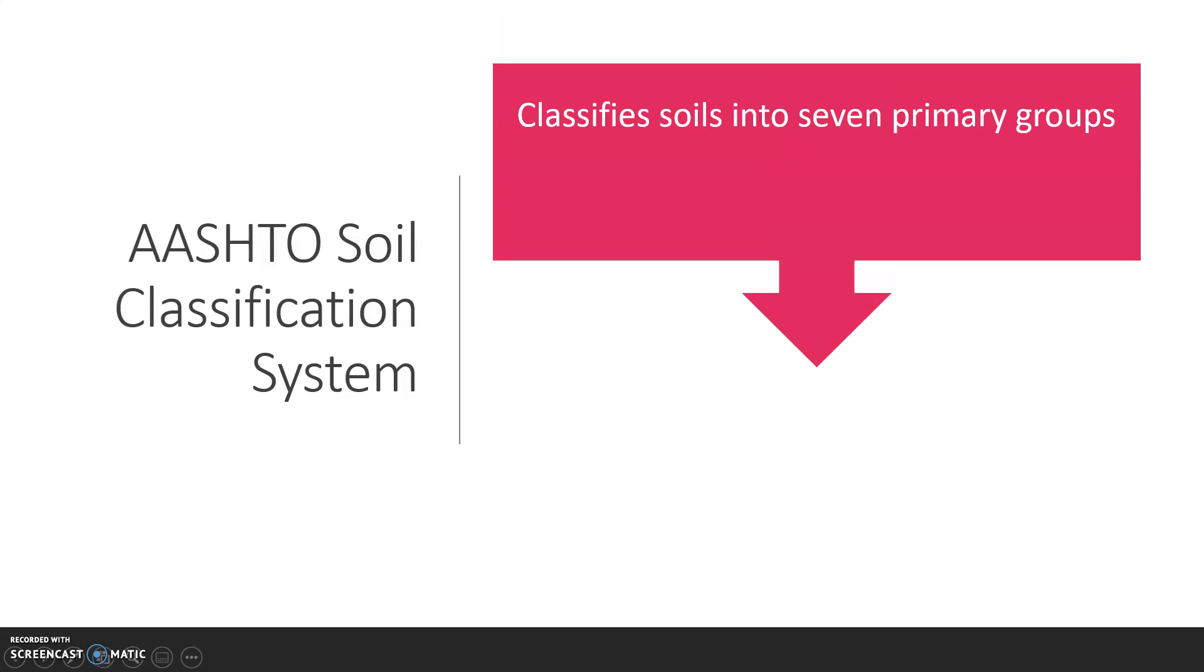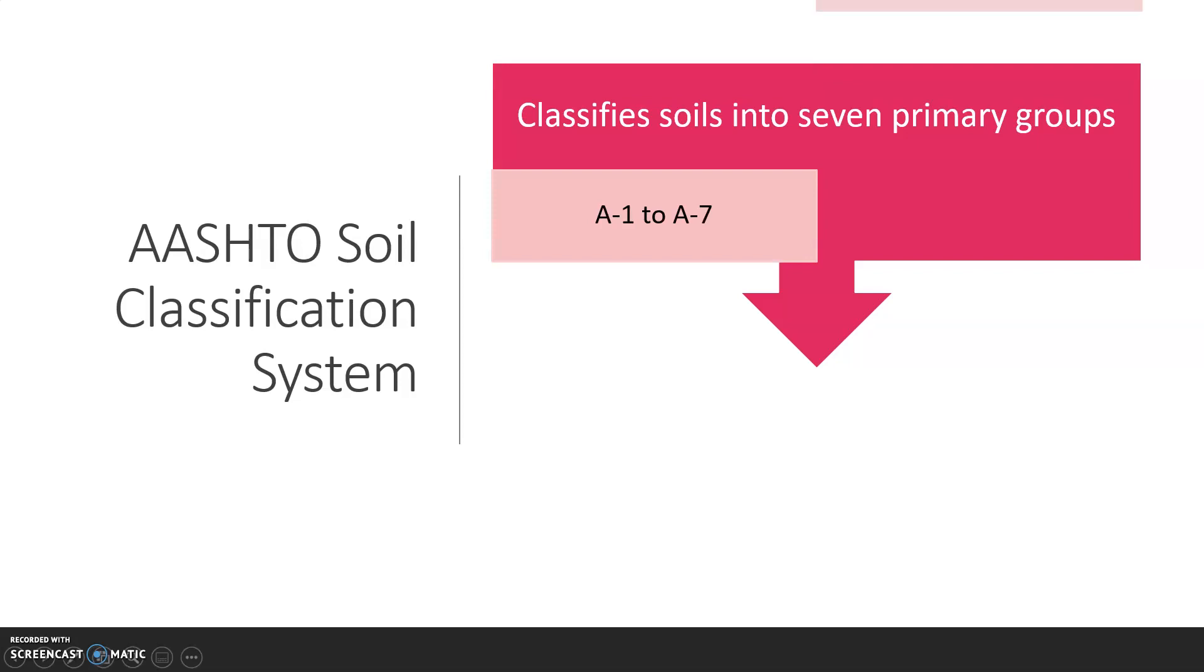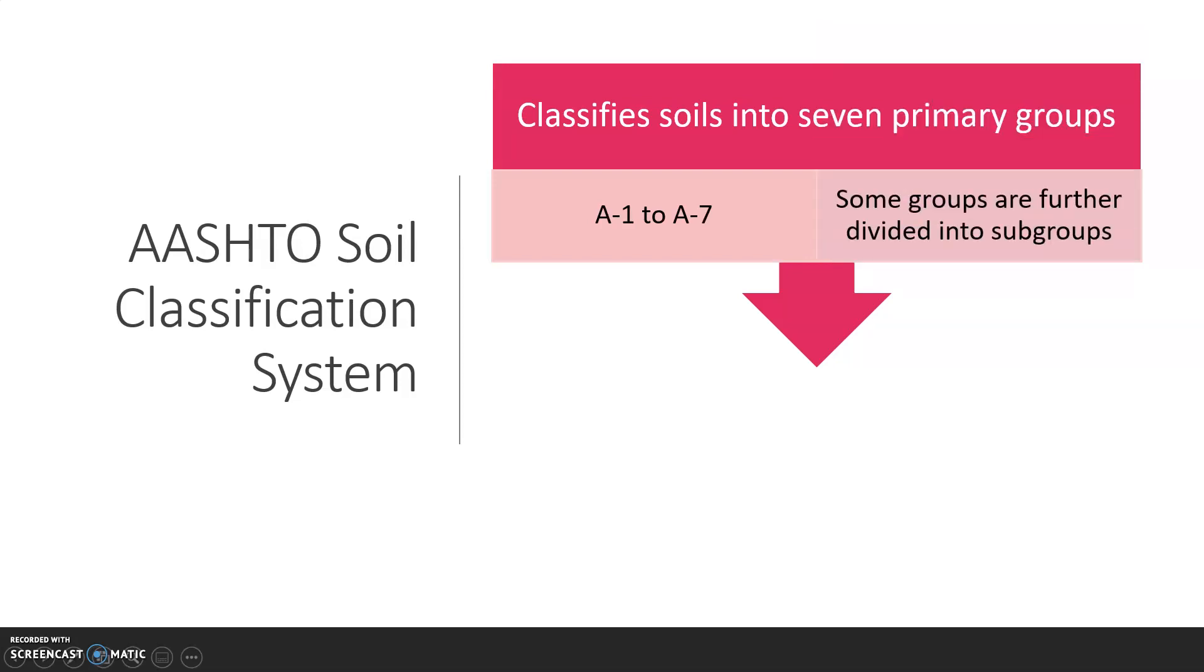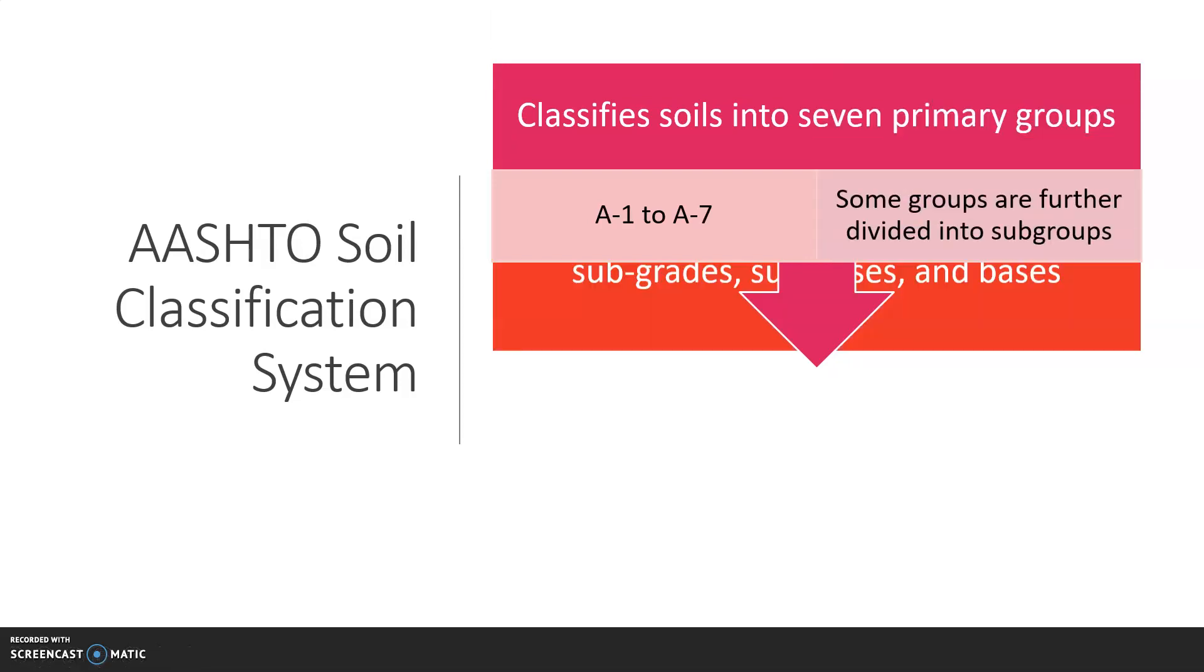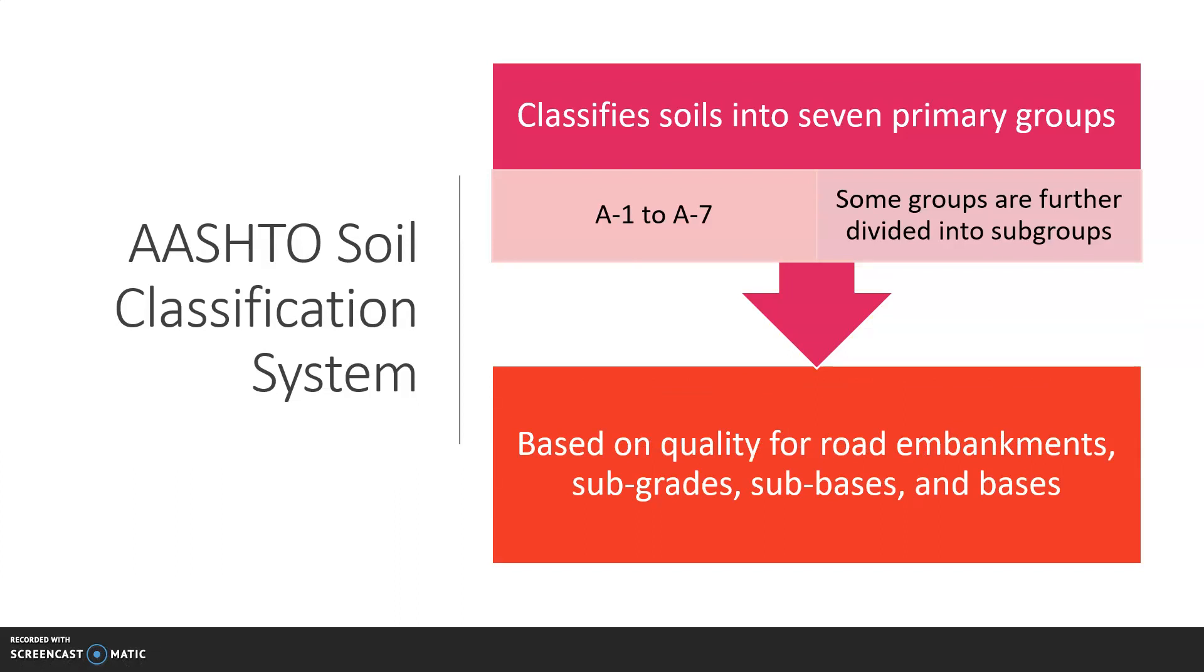The AASHTO or American Association of State Highway and Transportation Officials classifies soil into seven primary categories, A1 to A7. Some of these groups are further divided into subgroups. The groups are based on quality for road embankments, subgrades, subbases, and bases.